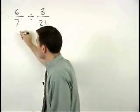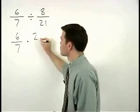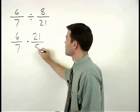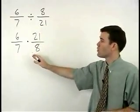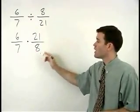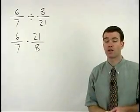So when dividing by a fraction, we can just multiply by the reciprocal of that fraction or that fraction flipped. Next we cross cancel.